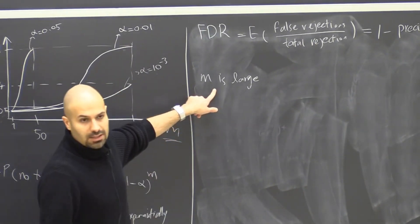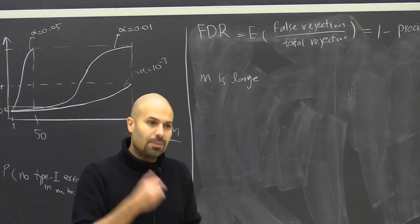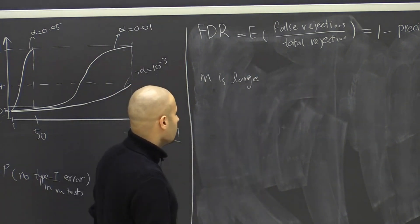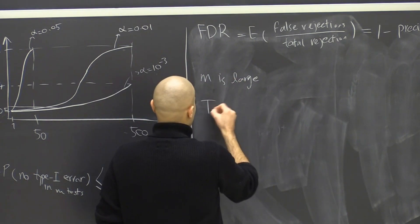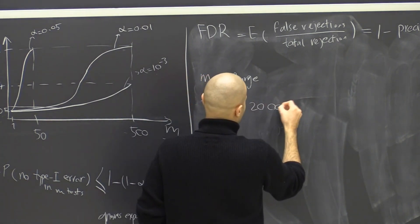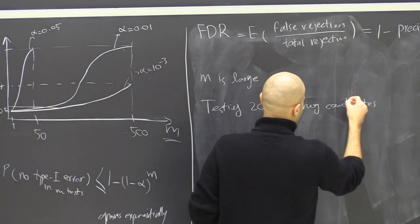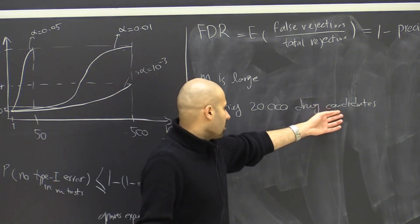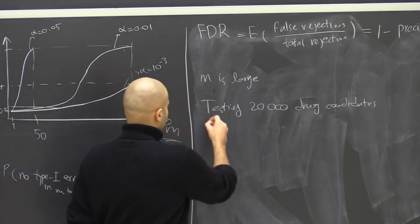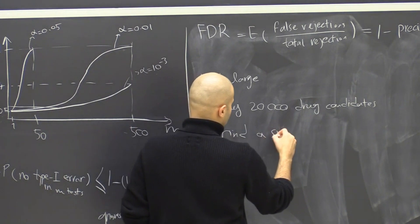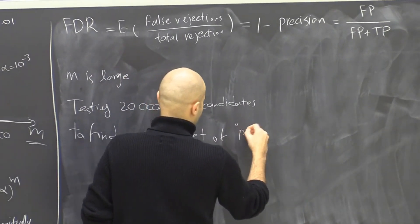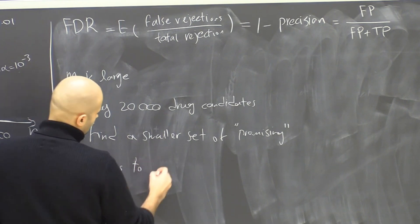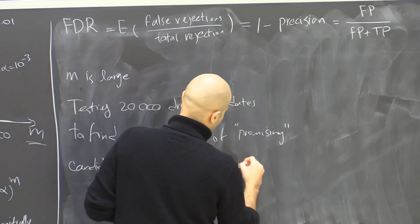Because we are running, let's say, 20,000 tests. Considering the probability of not making any type 1 error is a bit too much. Maybe we just don't want too many false discoveries. So for example, let's say we're testing 20,000 drug candidates from biology and medicine and pharmaceutical sciences. We're testing these candidates to find a smaller set of promising candidates to follow up on with wet lab experiments.